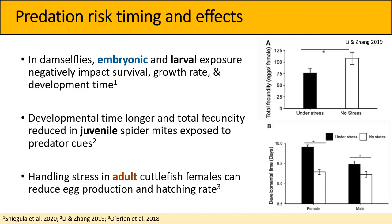These are not snail-specific examples — they're spread more broadly across taxa. The first example looks at embryonic and larval exposure in damselflies. When these animals were exposed to predator cues in those early life stages, the authors found negative impacts on survival, growth rate, and development time. Moving a little later in the lifetime, to more juvenile stages...